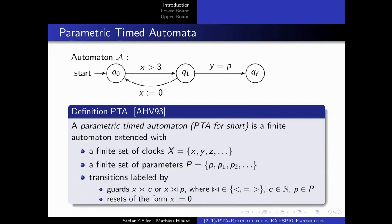What does a run look like in a parametric timed automaton, or PTA for short? For an evaluation of the parameters to the naturals, a run is a sequence of configurations where you go from one configuration to the next using a transition by letting some time elapse, incrementing all clocks at the same rate, making sure the tests in the transition are satisfied, and that clock resets assign zero to the appropriate clocks.